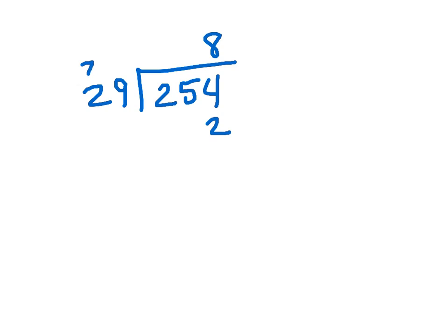8 times 9 is 72. Carry that there. 8 times 2 is 16, plus that is 23. And you subtract those right there.